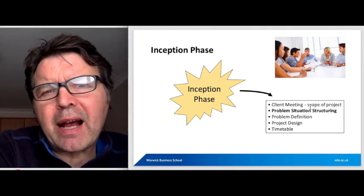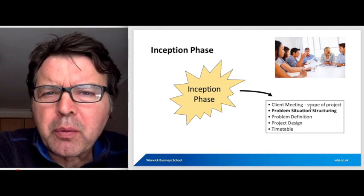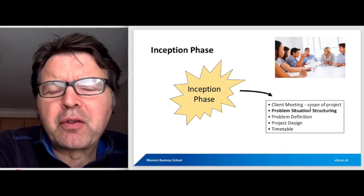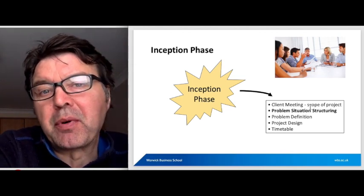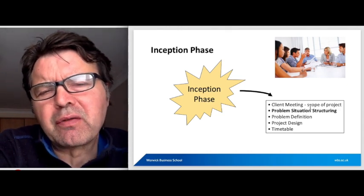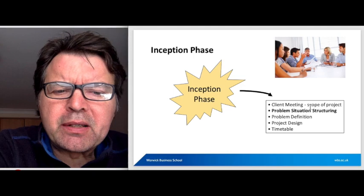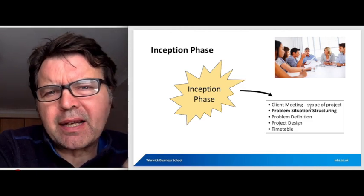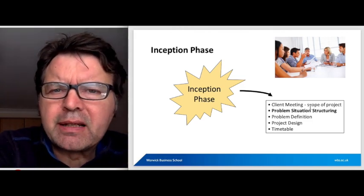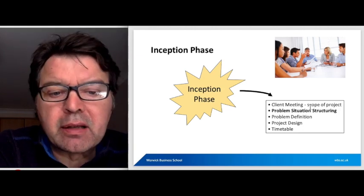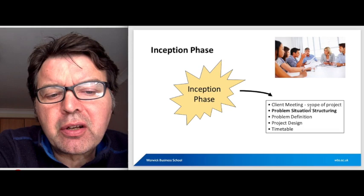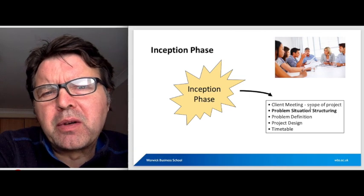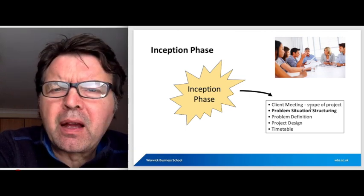But even so, when you actually get to sit down and do the project, there'll be a slight renegotiation of the project, because often the client contact is perhaps not the same person that was involved in the selection of the consultancy firm. So there'll be some degree of problem situation structuring. And that will be really about the project team and the client team trying to agree exactly what's going to happen in the project. So things like problem definition, there'll be some kind of timetable agreed, there'll be some kind of project design agreed.